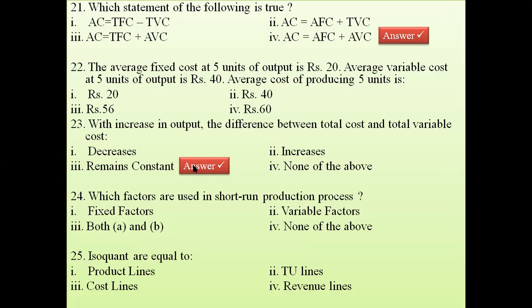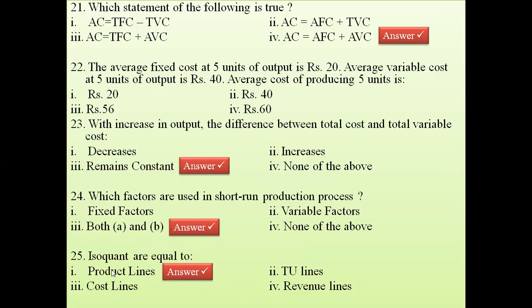Question 24: which factors are used in the short-run production process? Both fixed and variable factors — already discussed. The answer is both A and B. Question 25: isoquants are equal to — product lines, cost lines, total utility lines, or revenue lines? As discussed in the lecture, isoquants are product lines.